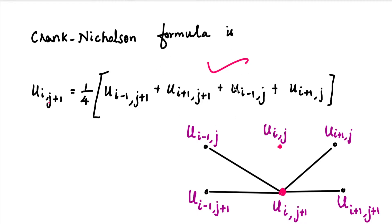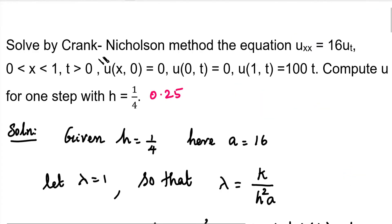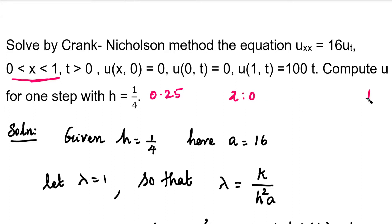Let's set up the problem. Lambda equals k divided by a*h². In this question, x varies from 0 to 1, so the lower limit is 0 and the upper limit is 1.